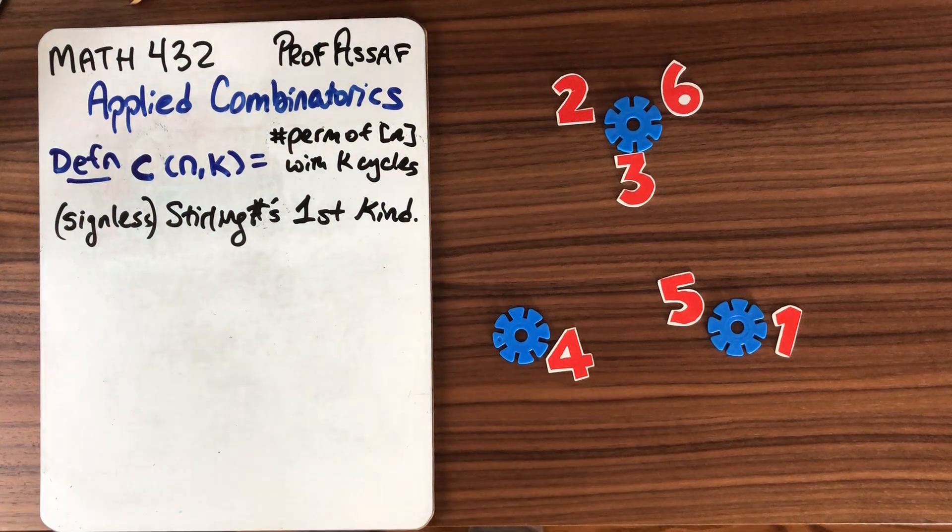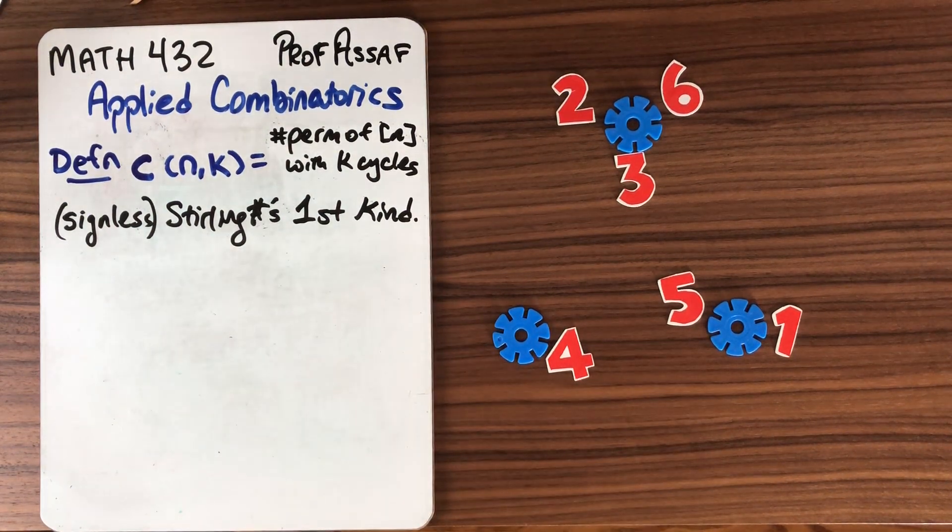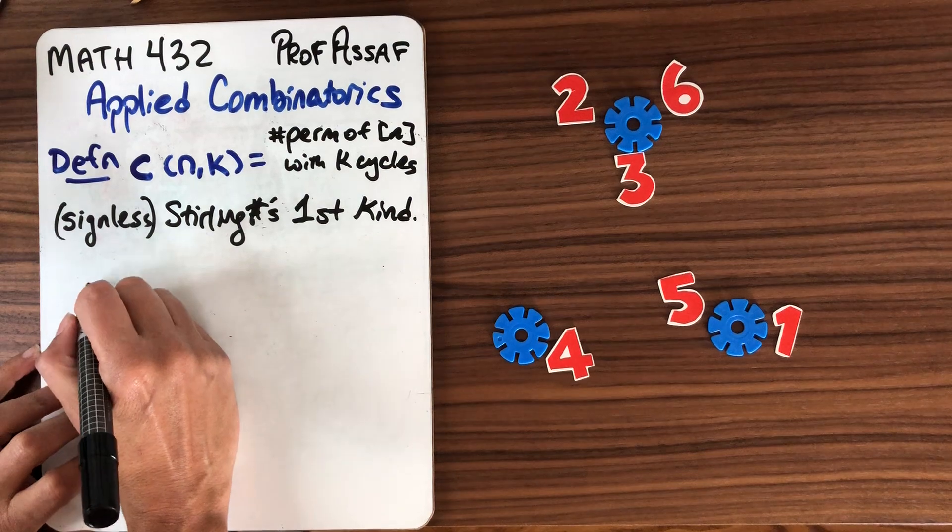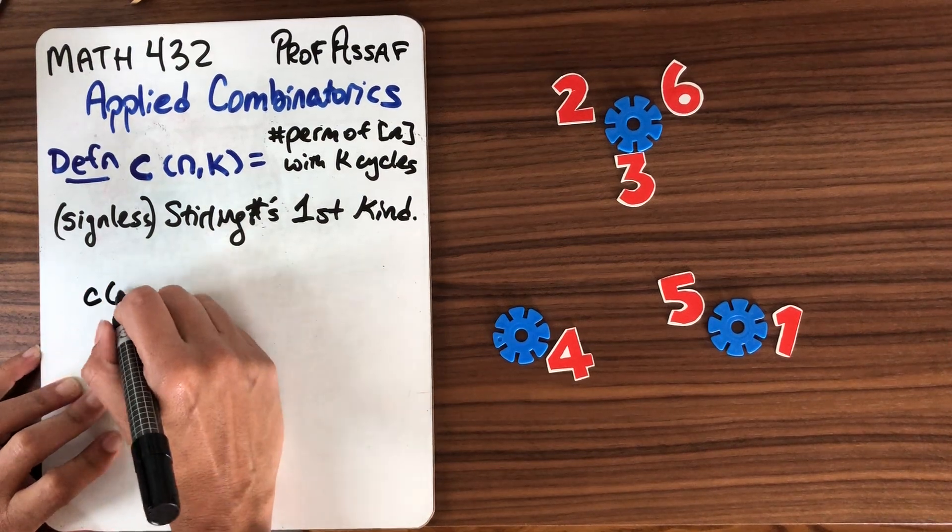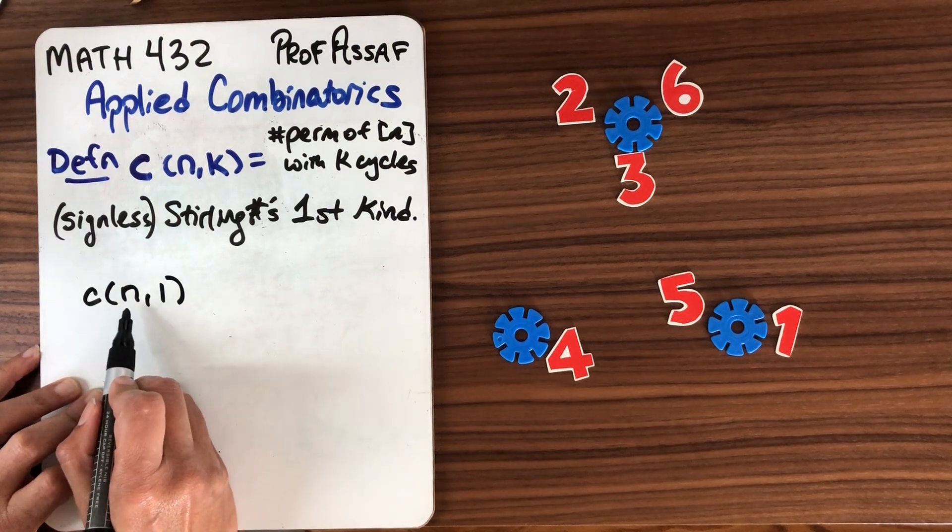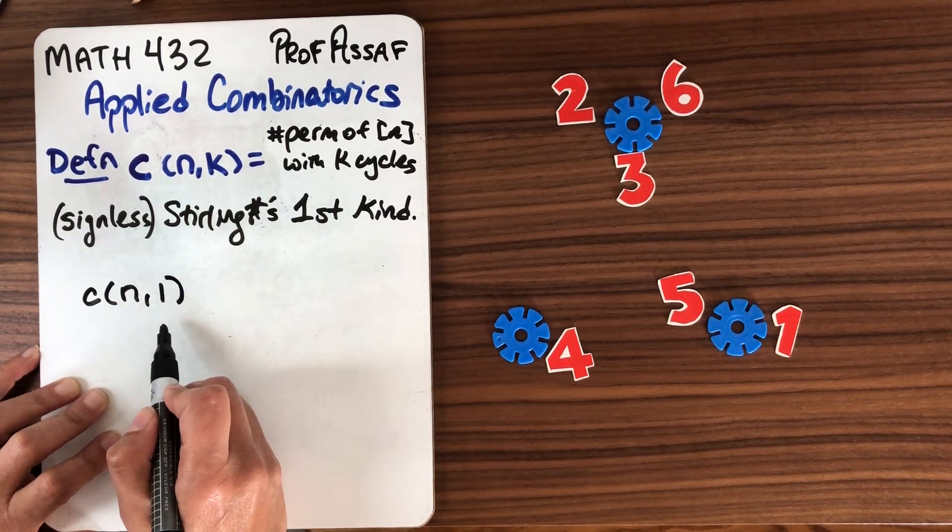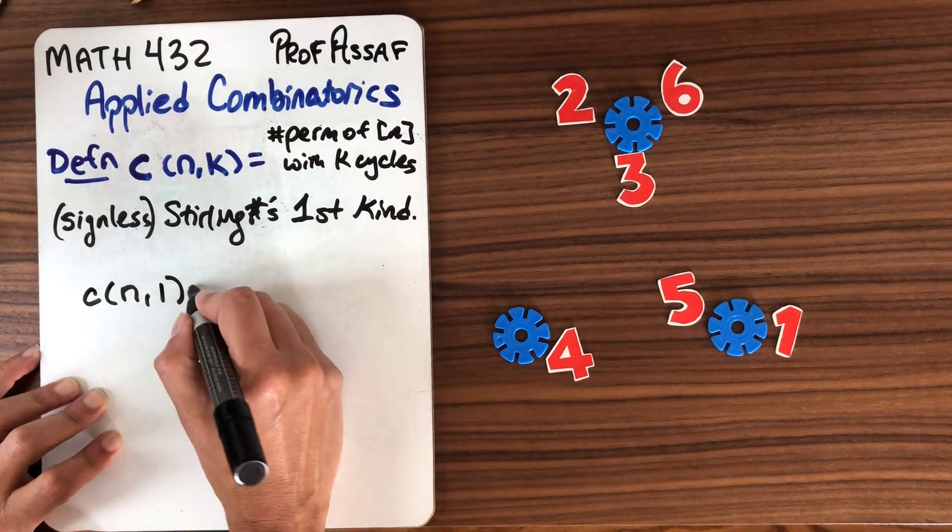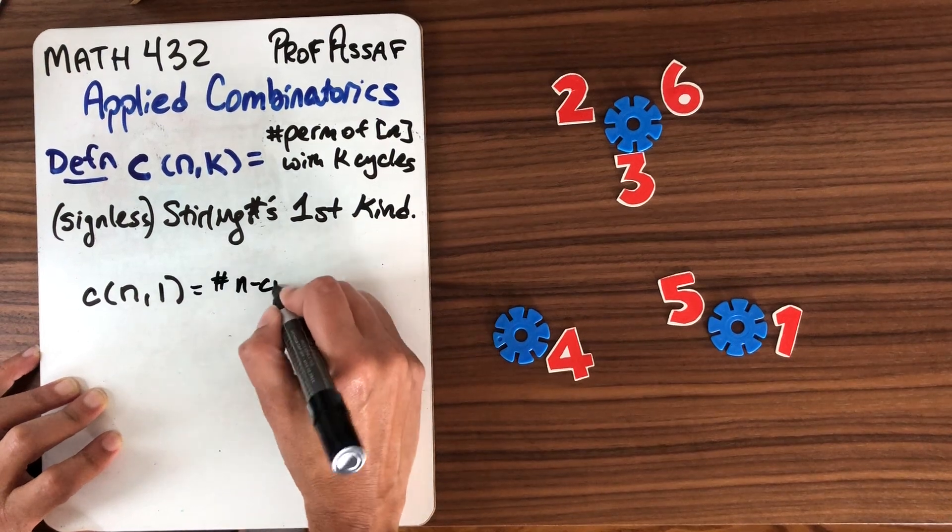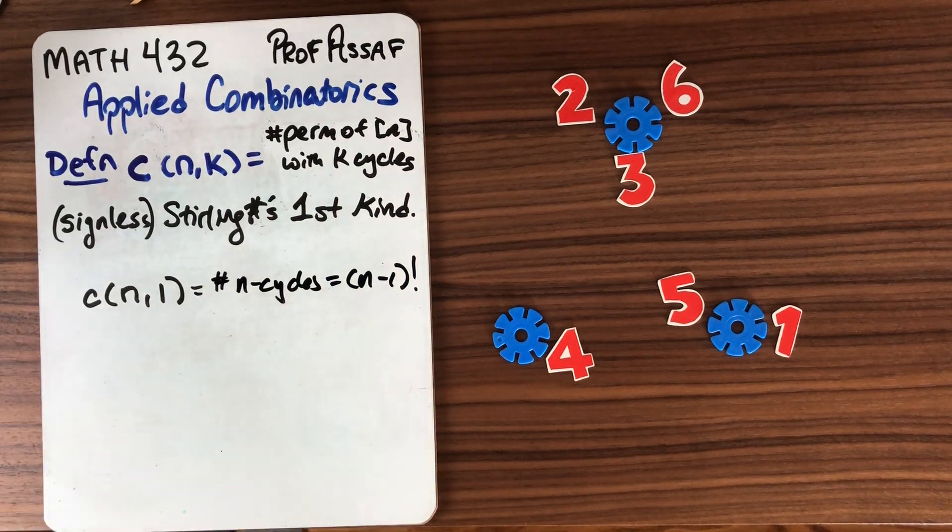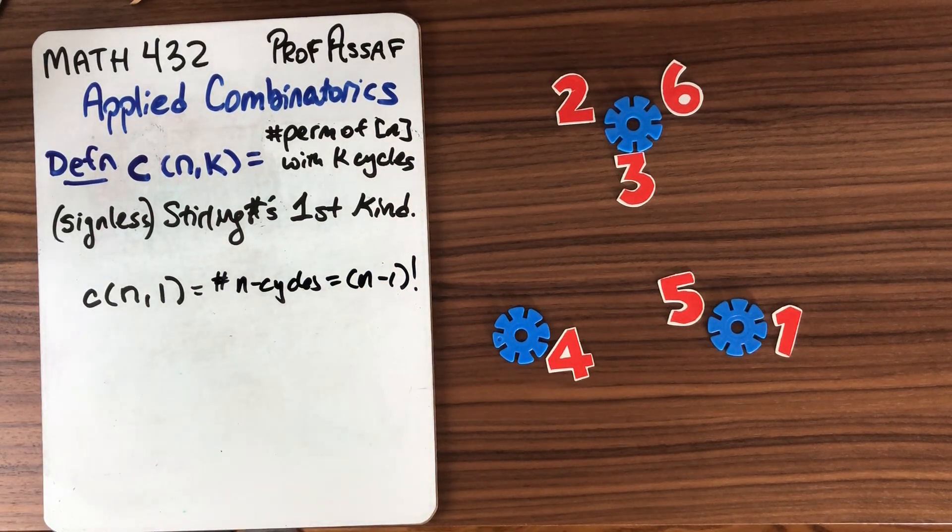Okay so it's still something that we can count and there's some simple formulas that we can get along the same way. So let's think about some of the extreme cases. What is c(n,1)? This says how many permutations of n have one cycle? Well we've done that before. Remember one cycle means it's all a single cycle. So this is just the number of n-cycles which we counted before is (n-1) factorial. That's already different than we had in the previous case.